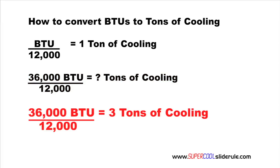We just set it up like this: 36,000 divided by 12,000, and our answer is 3. So 36,000 BTUs is equal to 3 tons of cooling.